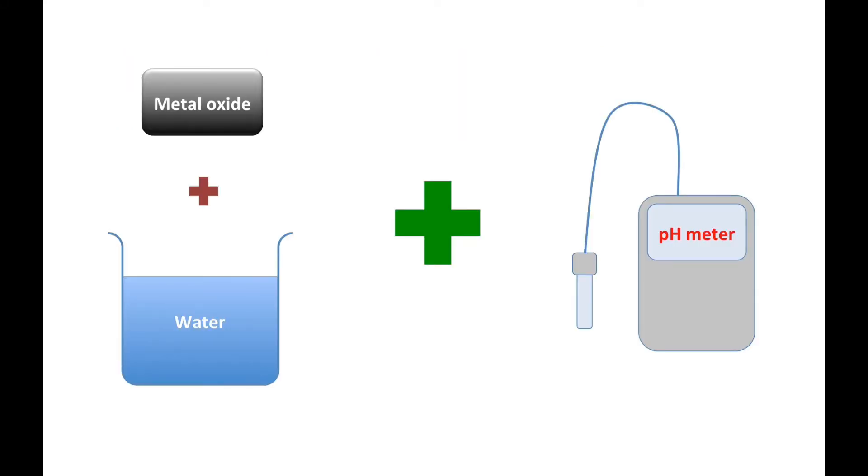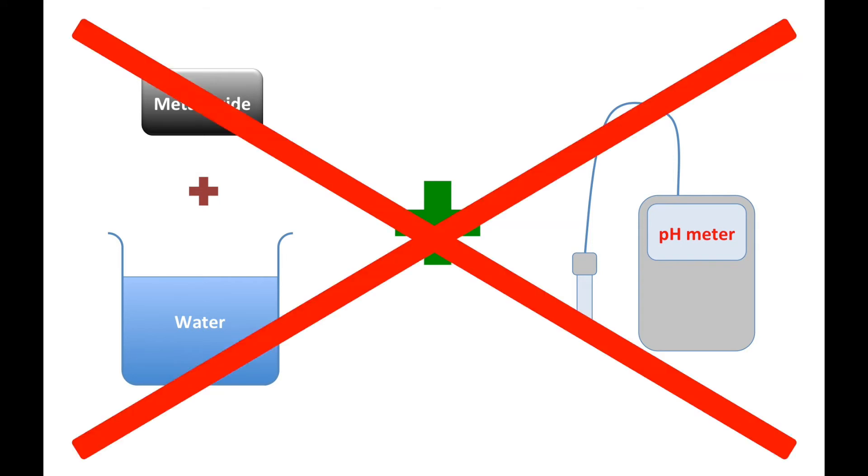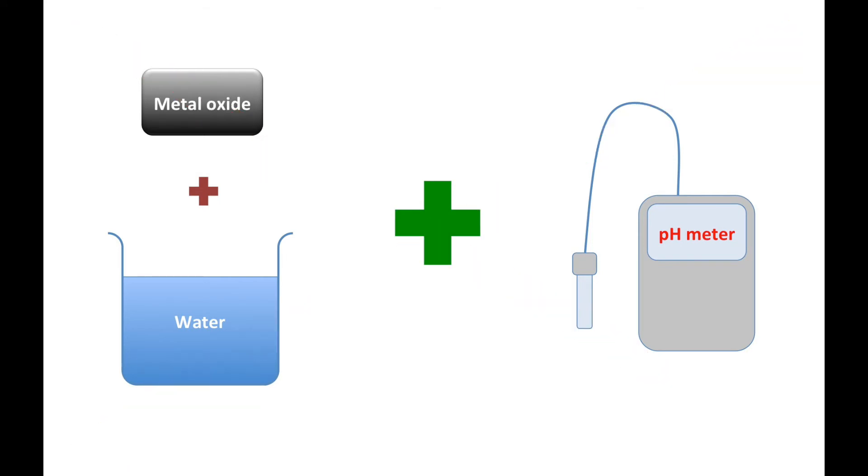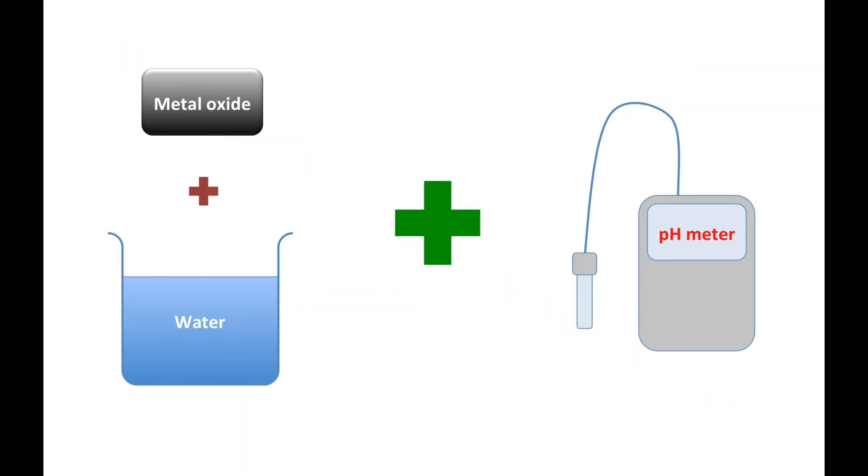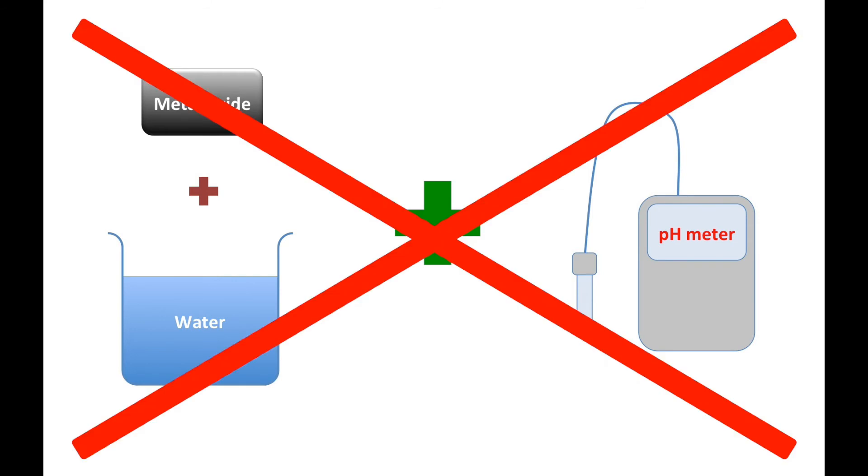Most of you may think to try dissolving the metal oxide into water, then try to measure the pH value to see if they have basic properties. But this is not correct because most metal oxides do not dissolve in water, and that means we cannot measure the change in pH value.